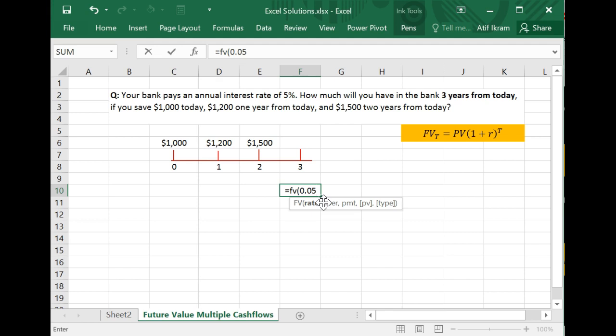Number of time periods. So notice that this $1,000 is going to grow for one, two, three years. So you enter three over here.